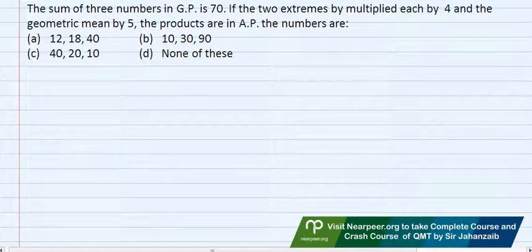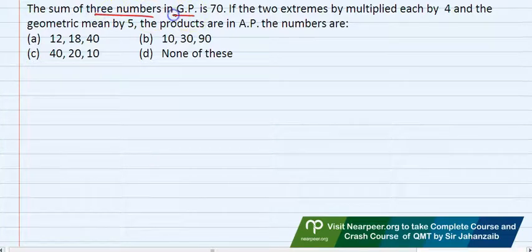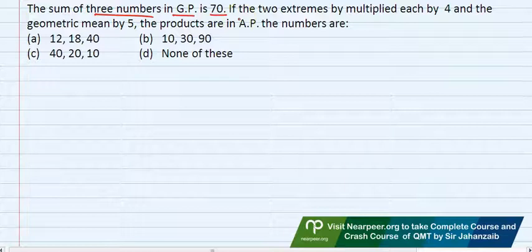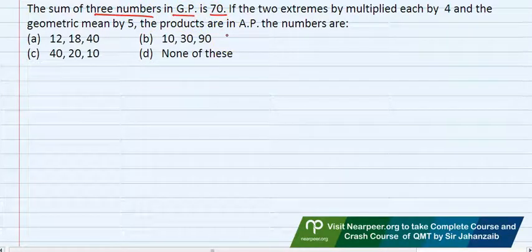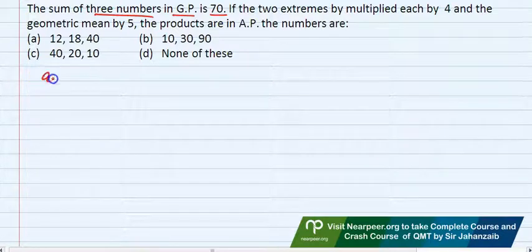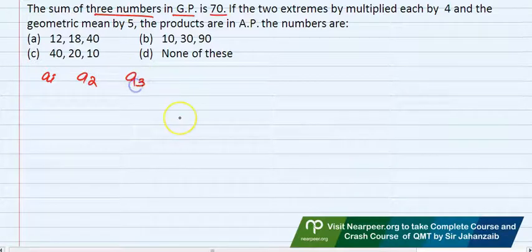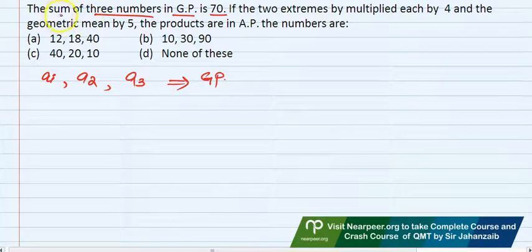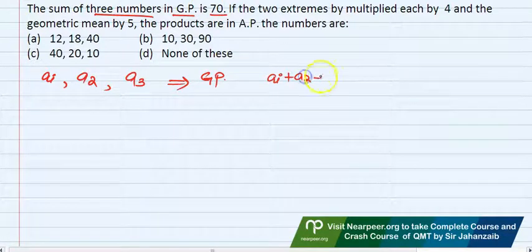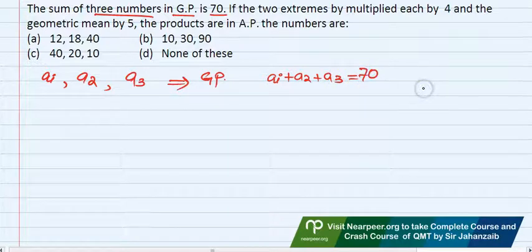Next question. The sum of 3 numbers in GP is 70. Three numbers in geometric progression. Let the first number be a1, second be a2, third be a3. They are in geometric progression. The first information given is that their sum is 70. So if I add first term plus second term plus third term, the answer is 70.